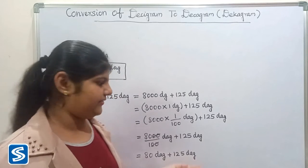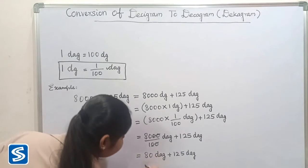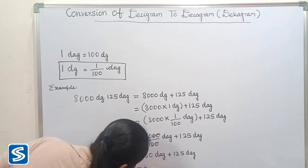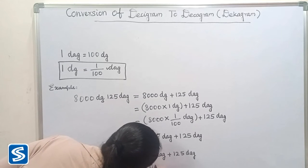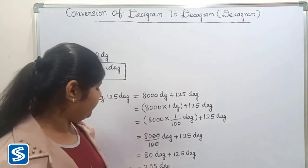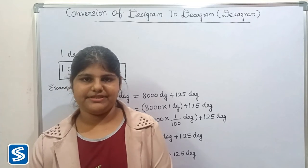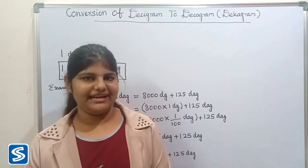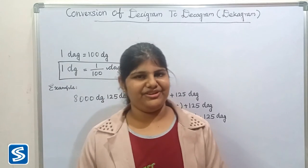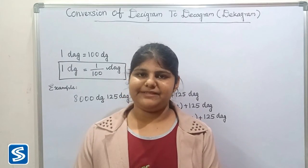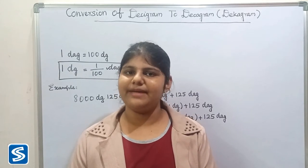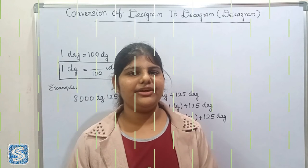So 80 decagrams plus 125 desigrams will be 205 decagrams. Hope friends you all understood how to convert desigram into decagram. If you did not subscribe to my channel, kindly subscribe to SOMSCH channel and press the bell button so you can receive all my updated videos regularly. Bye friends, thank you.